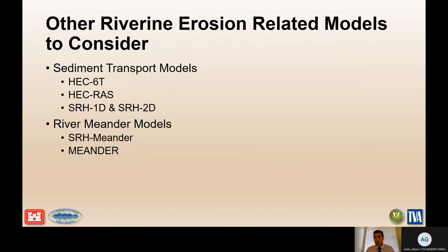Other erosion-related models to consider: sediment transport models such as HEC-6T, HEC-RAS, SRH-1D, and SRH-2D are very helpful for understanding vertical channel changes that bank retreat models like B-STEM or the Erosion Toolbox don't account for. In areas with significant river meanders, river meander models such as SRH-Meander and Meander from Texas A&M may also be very helpful.